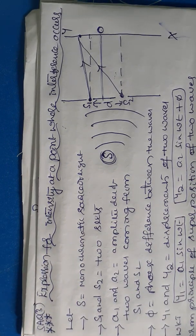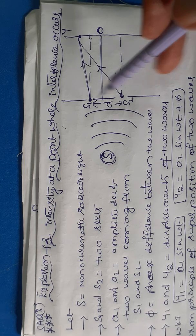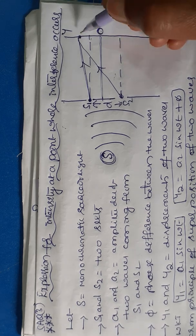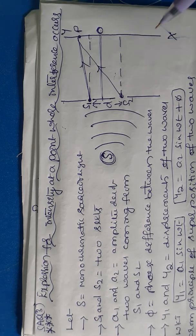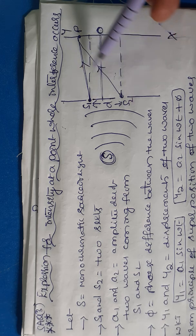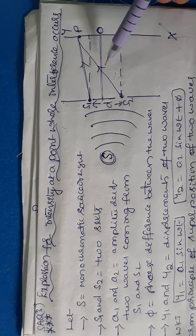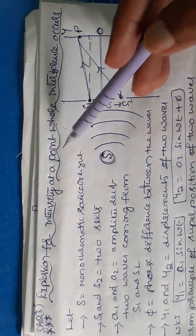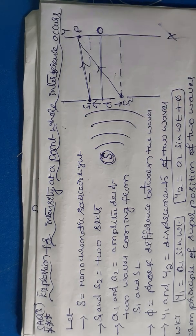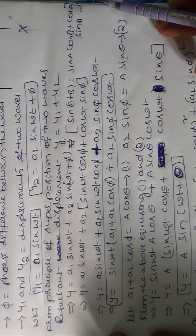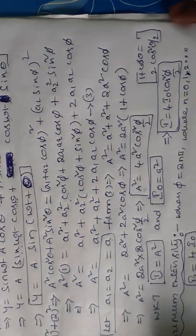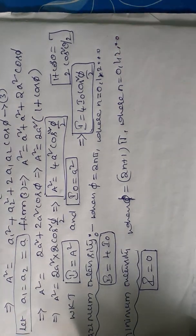This is a most important four-mark topic. To recap: S is the monochromatic source of light; S1 and S2 are two slits separated by small distance d; O is the midpoint; XY is the screen. Point P is where interference occurs. The waves from S1 and S2 have the same amplitude, frequency, and wavelength. At point P they undergo interference, producing maximum and minimum intensity patterns — this is the interference phenomenon.